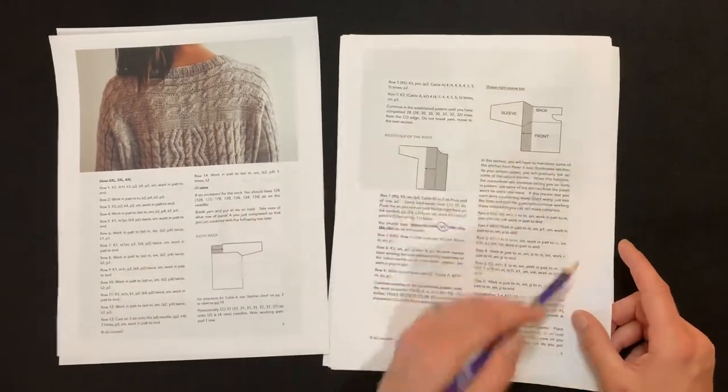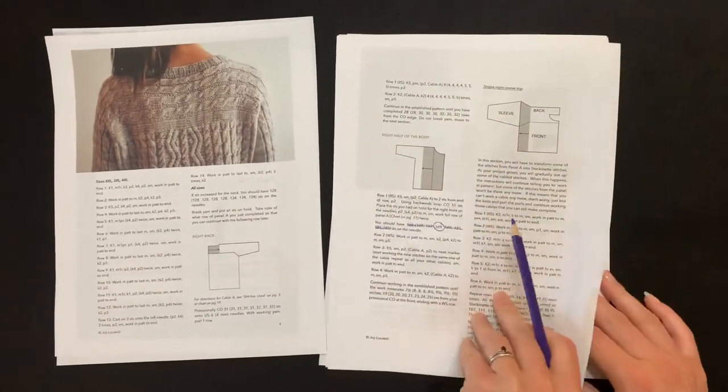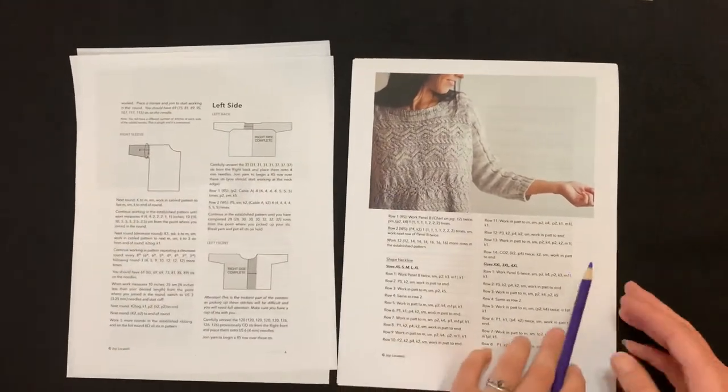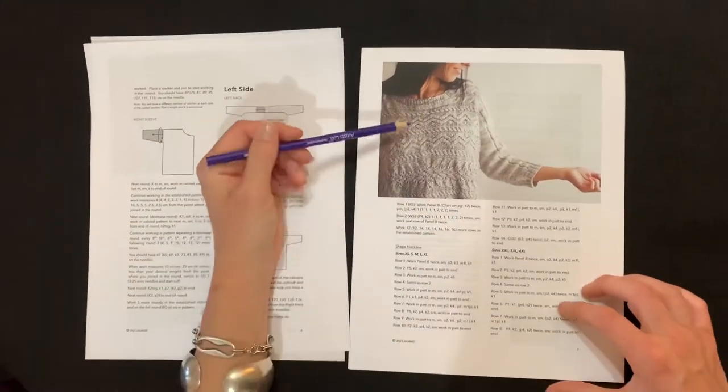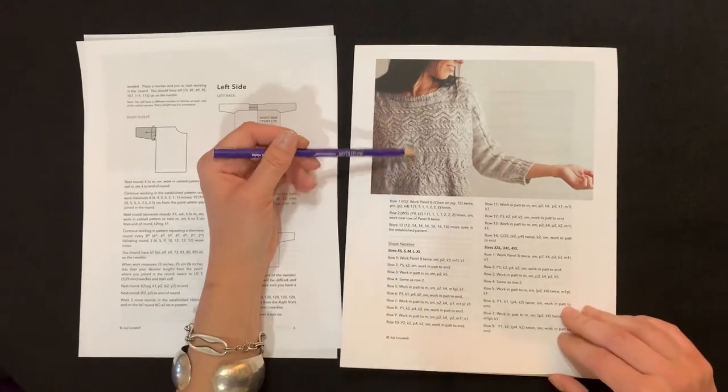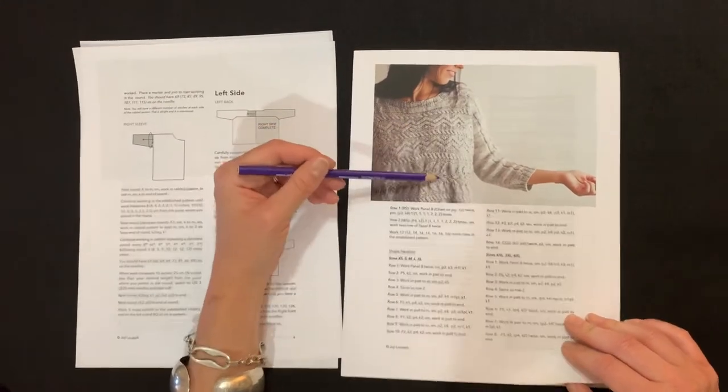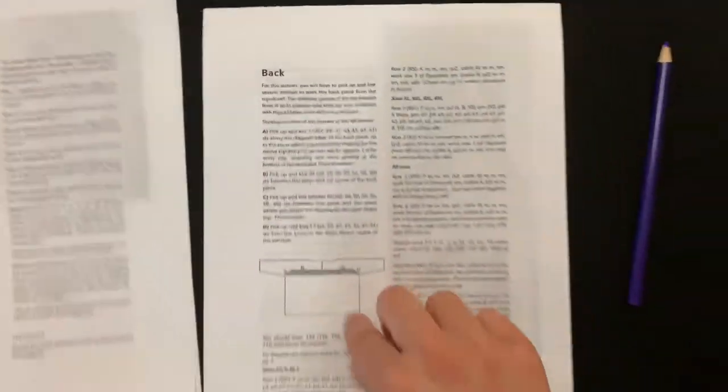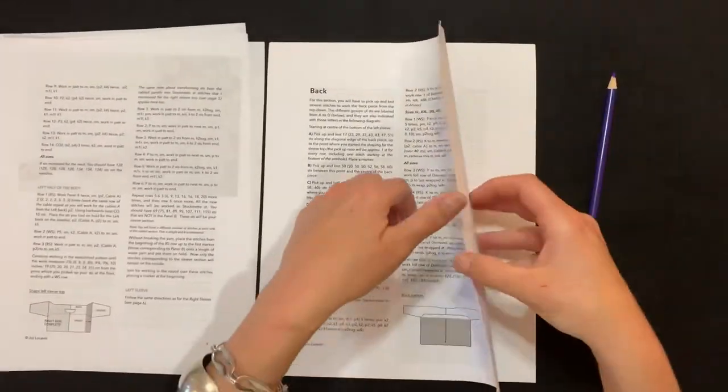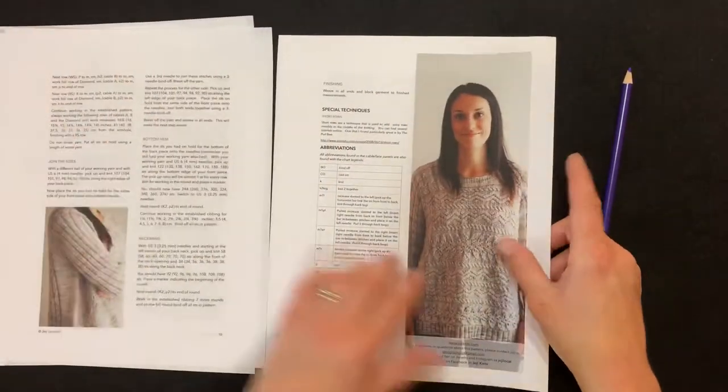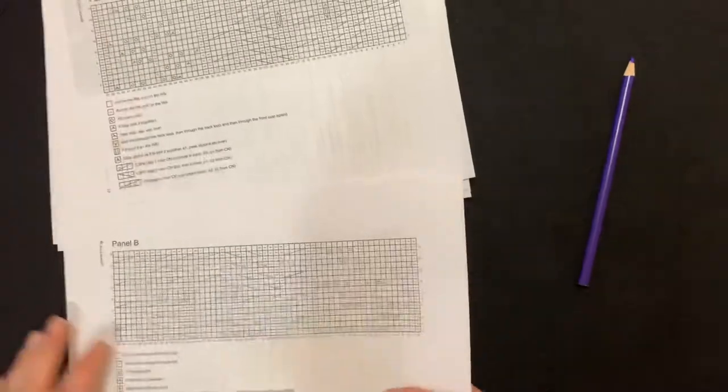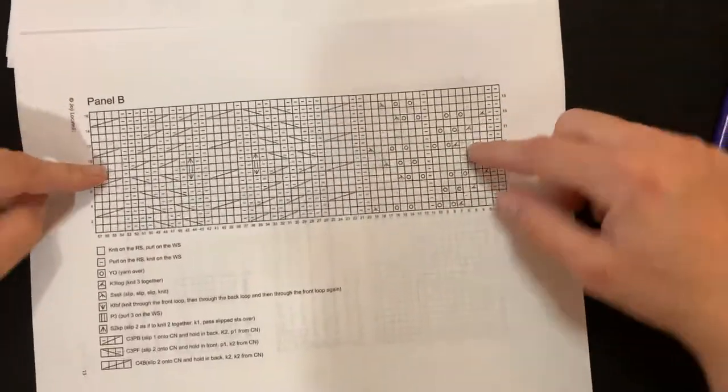So here we go. So you see there's schematics that show where you are on the pattern, what part of the sweater you are currently making. You can see this one has a very interesting construction. Also it's full of cables and lace and this cable and lace pattern happens more than one time. What Hoey Locatelli has done is we have cable charts. So she's provided us with cable charts.